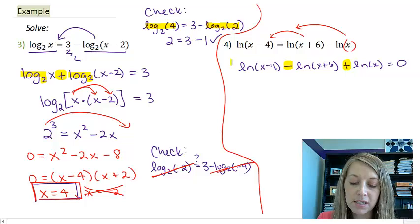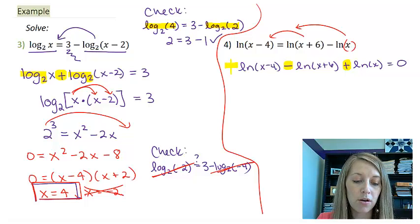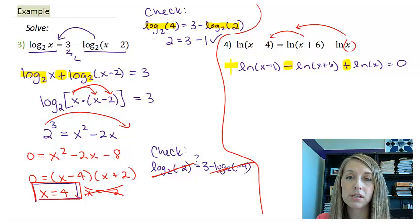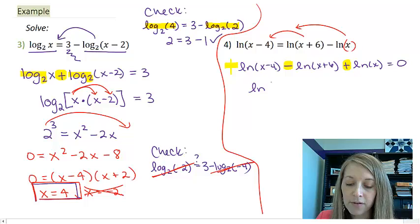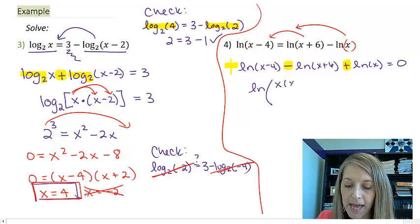So everything that's addition is going to go in the numerator, and everything that's subtraction is going to go in the denominator. So this is the same thing as the natural log of x times x minus 4 over x plus 6.